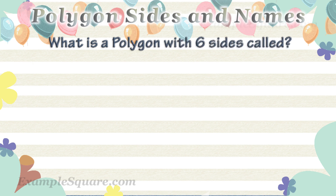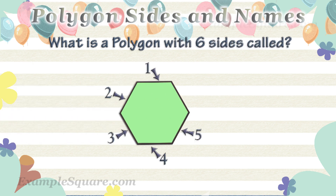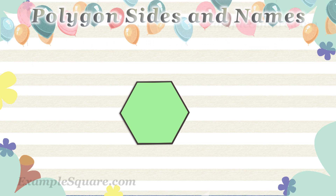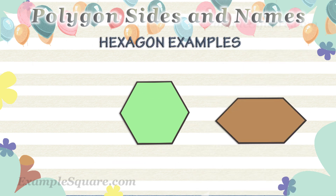What is a polygon with 6 sides called? A polygon with 6 sides is called a hexagon. These are some examples of hexagons.